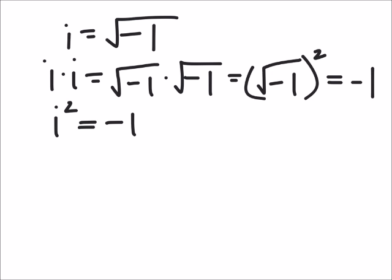Well, i³ is the same as i times i². Actually, I'm going to make that i² times i. That'll make it work a little bit better. Well, based on what we just found out, i² is negative one, and then it would just be times an i. And that's how we get the negative i value for i³.